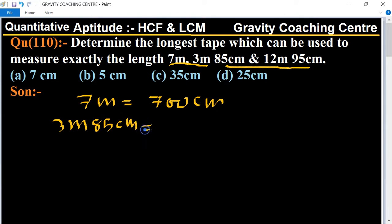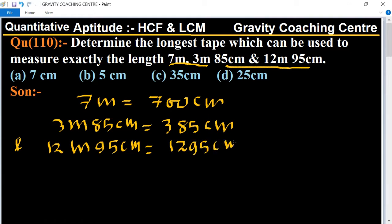And 12 meter 95 centimeter equals 1295 centimeter. Now we will find the HCF of these numbers by shortcut method.